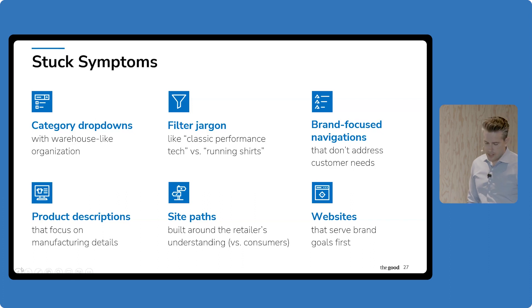So how do you know you need to talk to consumers? We call these stuck symptoms - things that you see on your site that help you understand that you need to start talking to consumers. Everything from category drop-downs that are organized like a warehouse. As a brand, we're going to organize our navigation like we would organize our warehouse because it makes sense to us. We know our products. Or having that brand-focused navigation or even focusing on manufacturing details in the product descriptions instead of the pain points we're solving for the consumers.